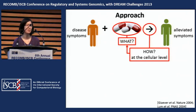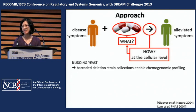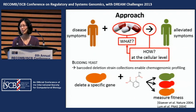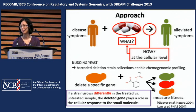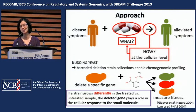Our approach involves budding yeast because the barcoded deletion strain collections allow us to perform in vivo chemogenomic profiling. Briefly, this entails treating each deletion strain with a compound and then measuring the resulting growth fitness, which can be either improved, reduced, or about the same. If a strain grows differently in the treated versus untreated sample, then the deleted gene is important for the cellular response to the small molecule. Because we have these deletion strain collections, we can test all the non-essential genes with homozygous deletion strains and all the essential genes with heterozygous deletion strains, allowing us to interrogate the whole genome to get a portrait of the cellular response to small molecules in vivo.